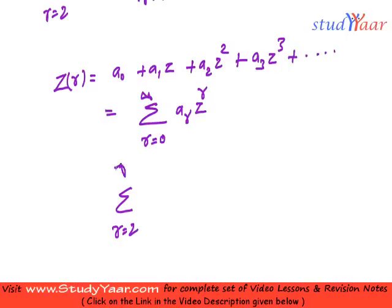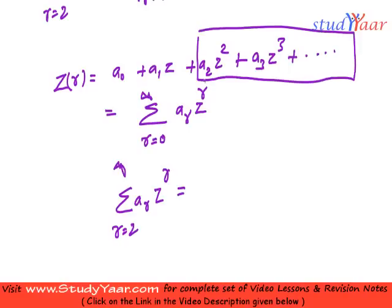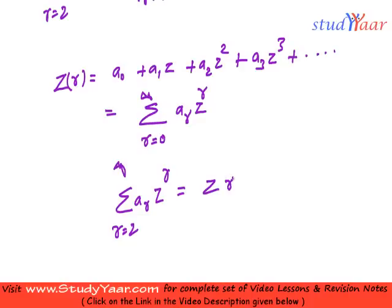Sum from R equals 2 to infinity of A_R Z^R - this is going to be all the terms from R equals 2, that is A_2 Z^2 plus A_3 Z^3 and so on. So this is going to be equal to Z(R) minus A_0 minus A_1 Z.